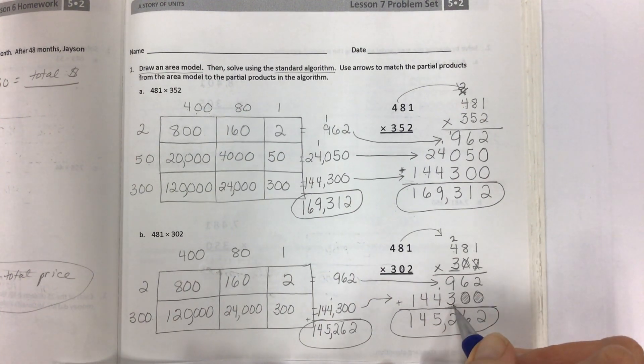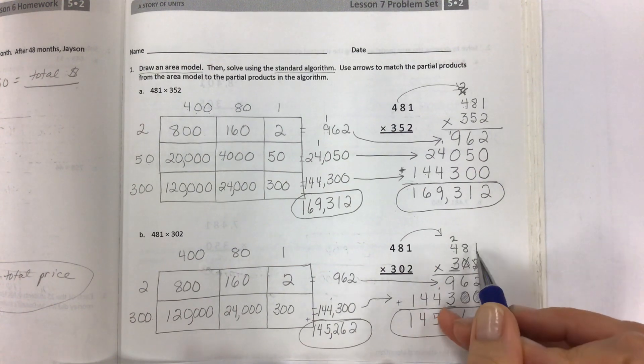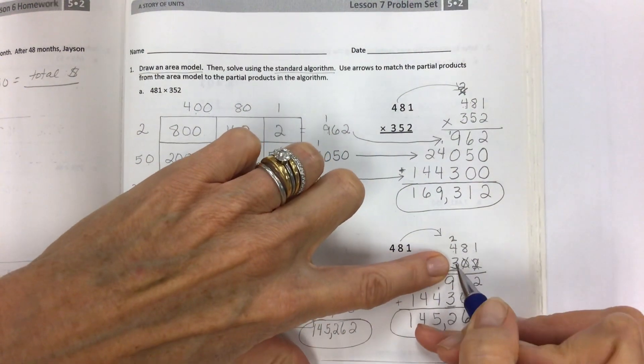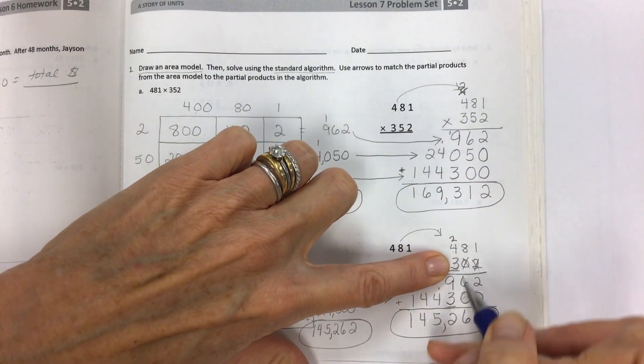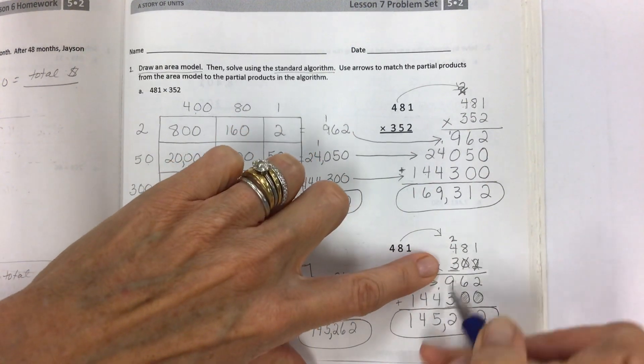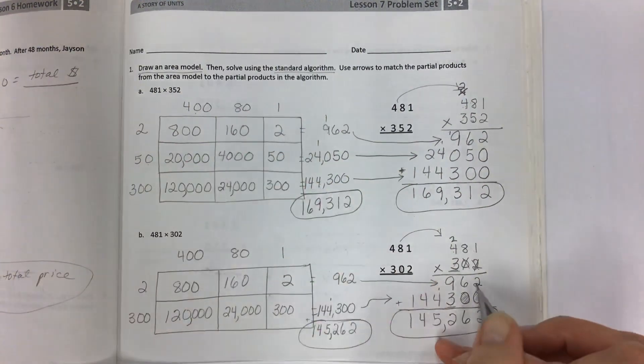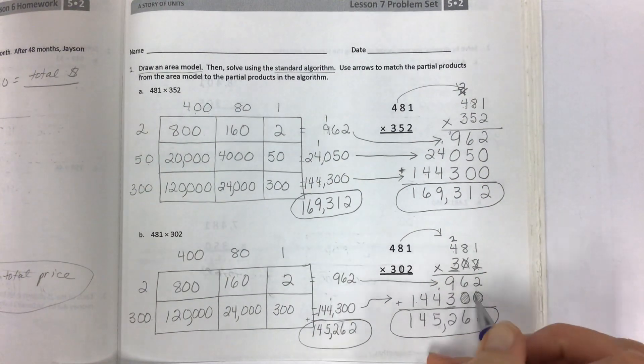Move to the hundreds place. Three hundreds times one is 300. You are now set and ready to go with your three. I already did the three times one. Now three times eight is 24. Carry the two. Three times four is 12 plus two is 14. And you don't have to have that row of zeros and then you can add straight down.